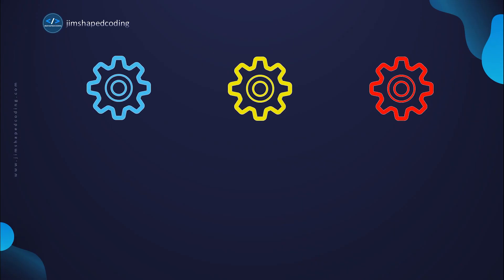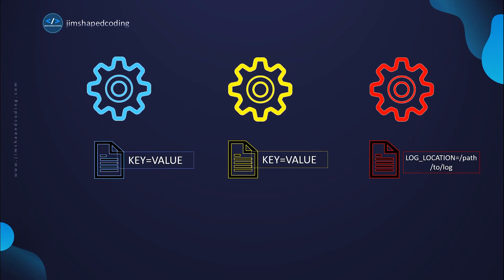An environment variable is basically a key-value pair that we can inject inside a process that is running right now on your system. It doesn't matter if it is a Linux or Windows based system — each one of those systems is going to have hundreds of processes that read from specific environment variables, and it could affect the way that a process executes.